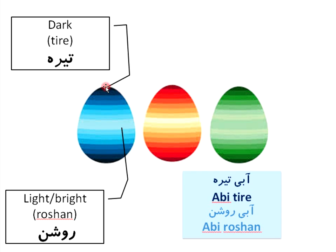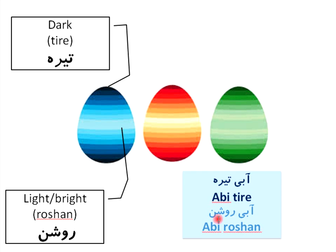As you can see here, we have a dark part and a light or bright part. For dark we say tireh, and for bright or light we say roshan. For example, aabi tireh means dark blue, and aabi roshan means light blue.